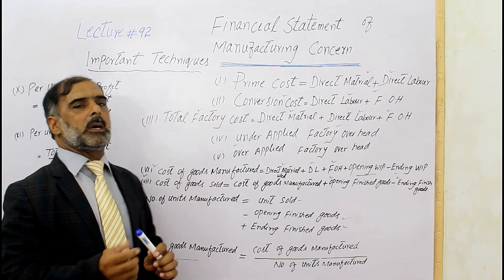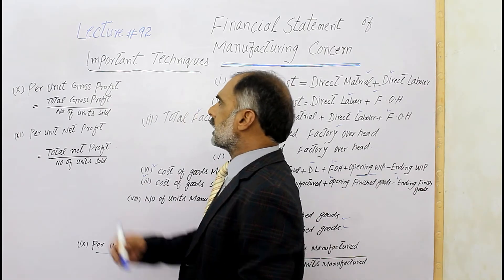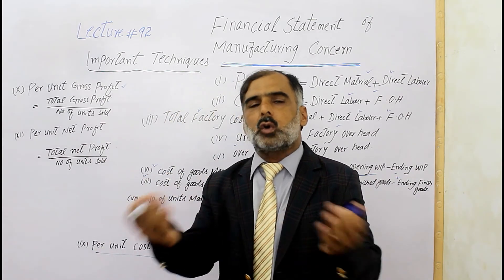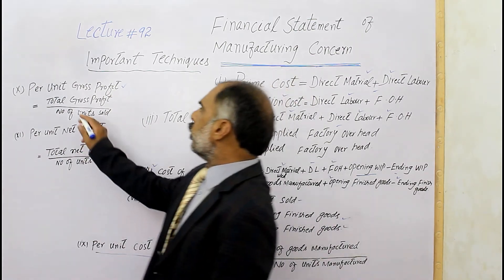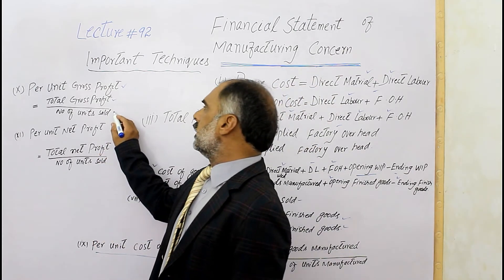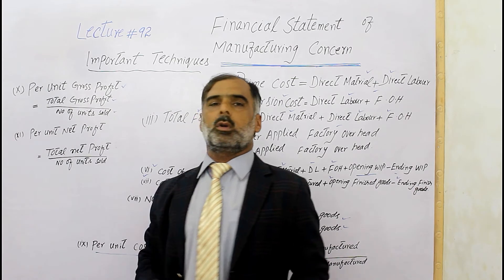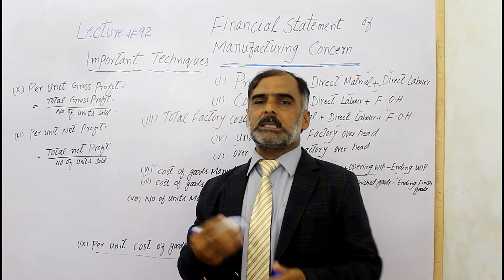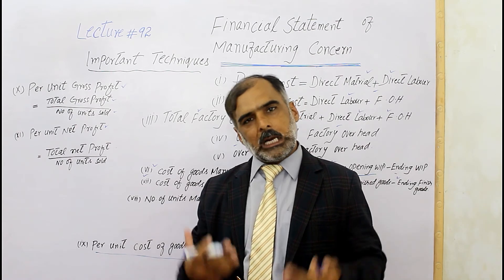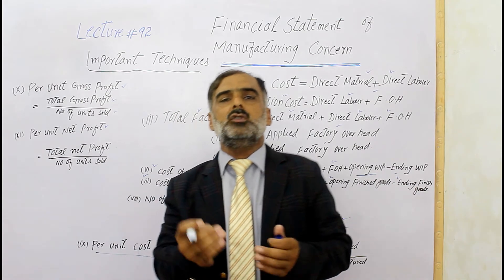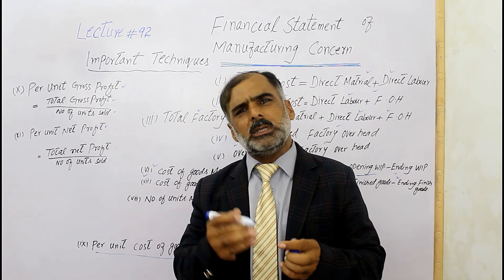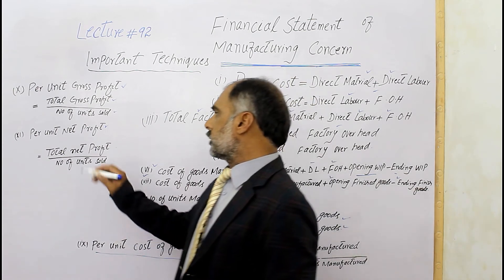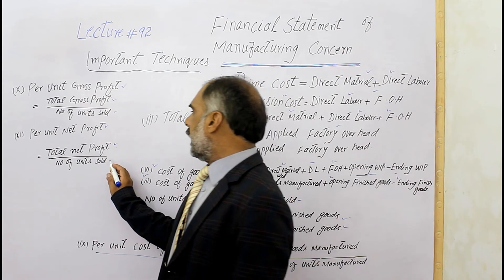There is also a formula for per unit gross profit. We take the total gross profit and divide by the number of units sold. Similarly, for per unit net profit, when we deduct other expenses and add other income from gross profit, we get net profit. Per unit net profit equals total net profit divided by the number of units sold.